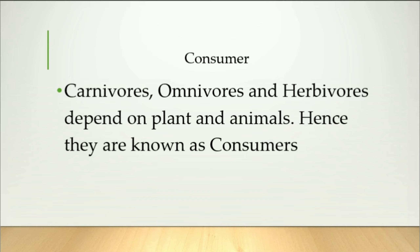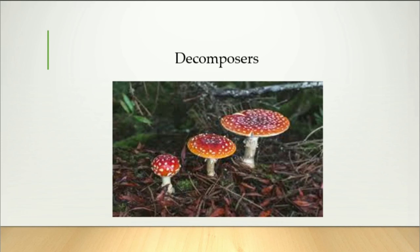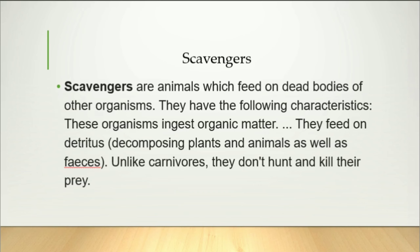Consumers: Carnivores, omnivores, and herbivores depend on plants and other animals, hence they are known as consumers. Decomposers: The microorganisms which convert dead plants and animals to humus are called decomposers — for example, bacteria and fungi. They help in the recycling of nutrients by decomposing dead plants and animals. In this picture you see an example of decomposers.